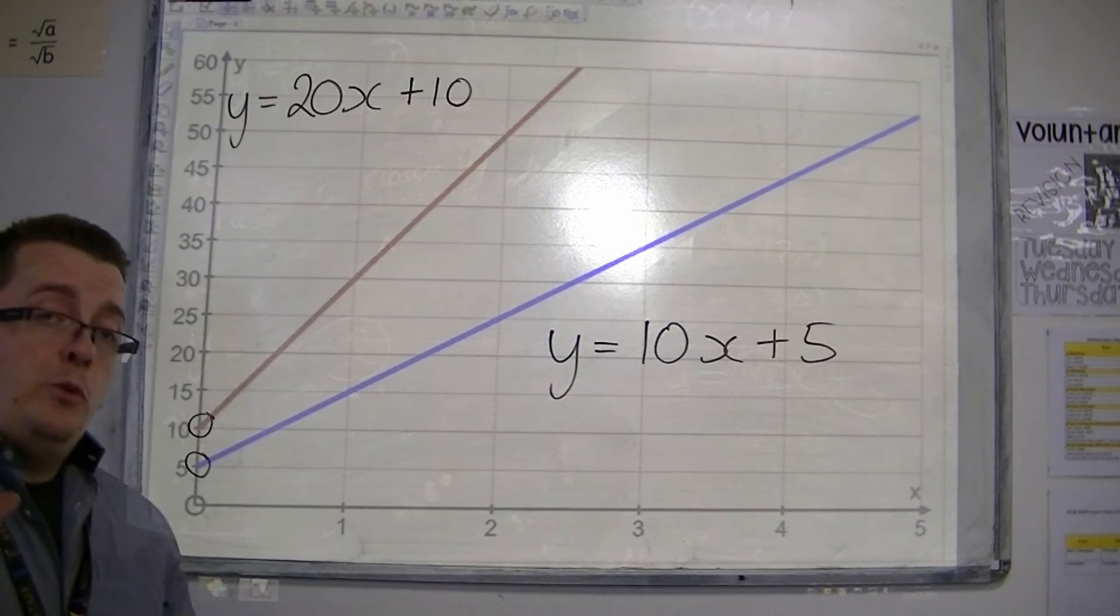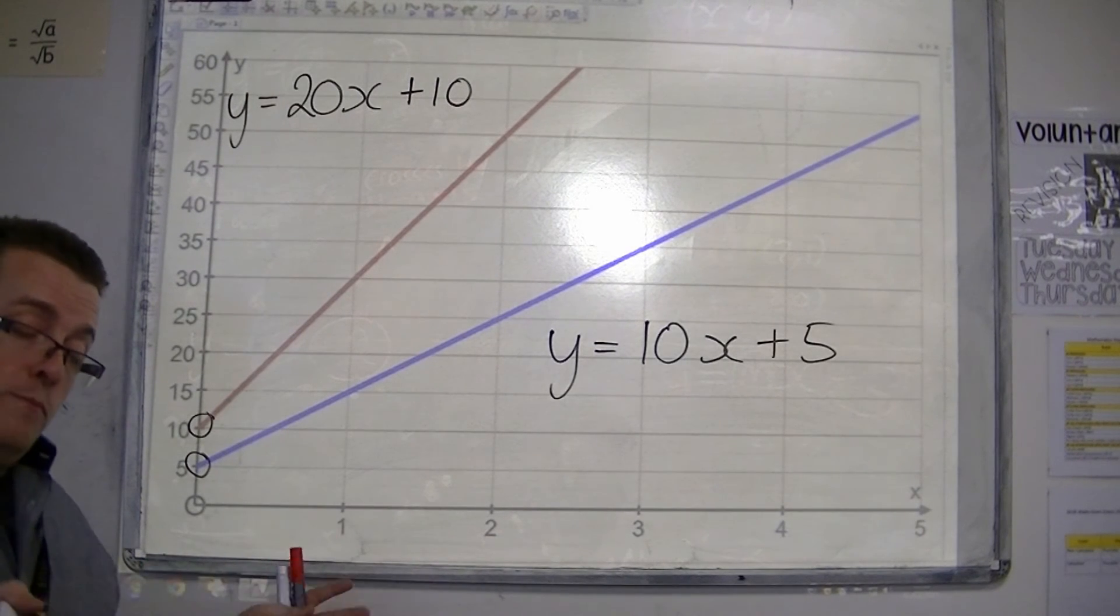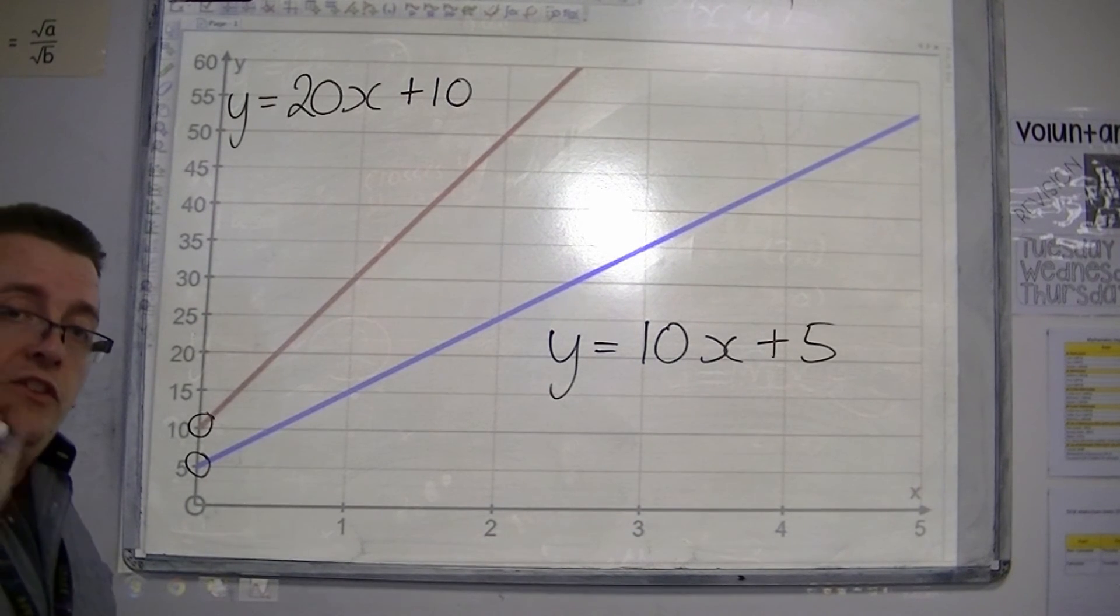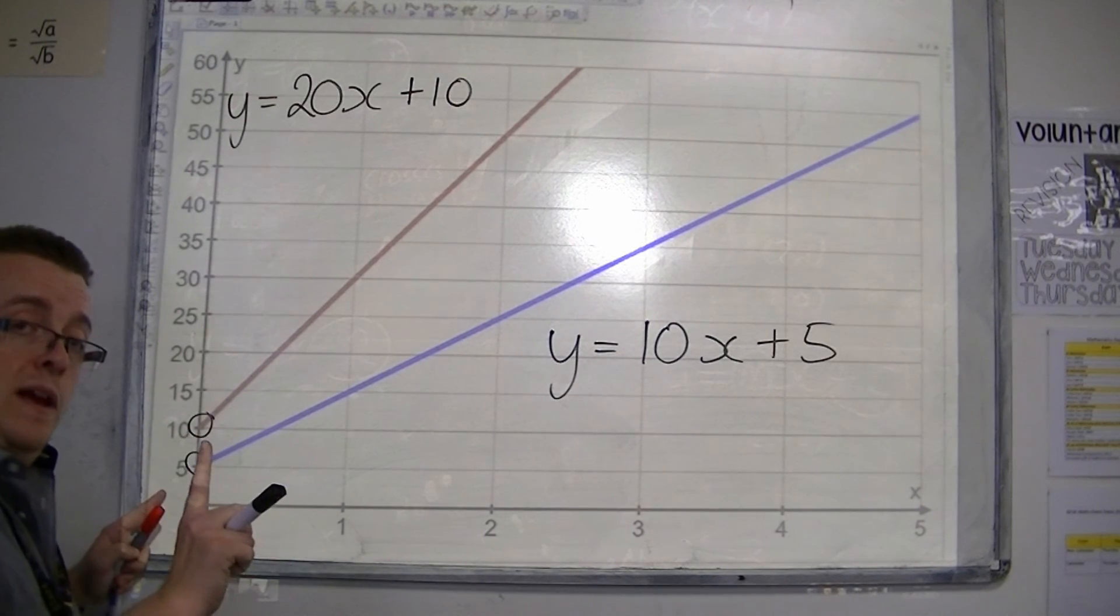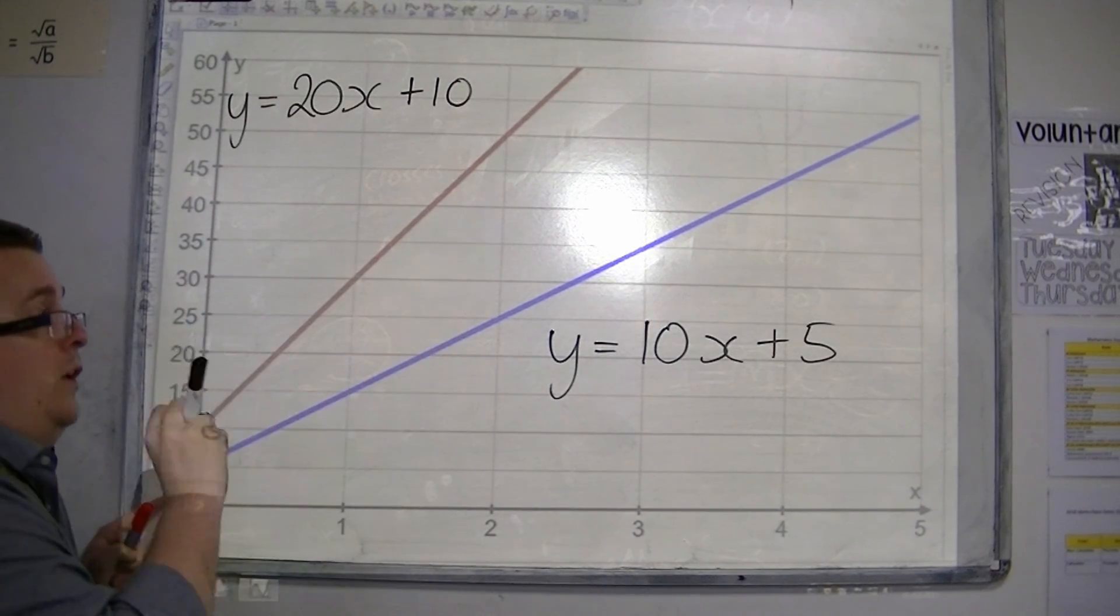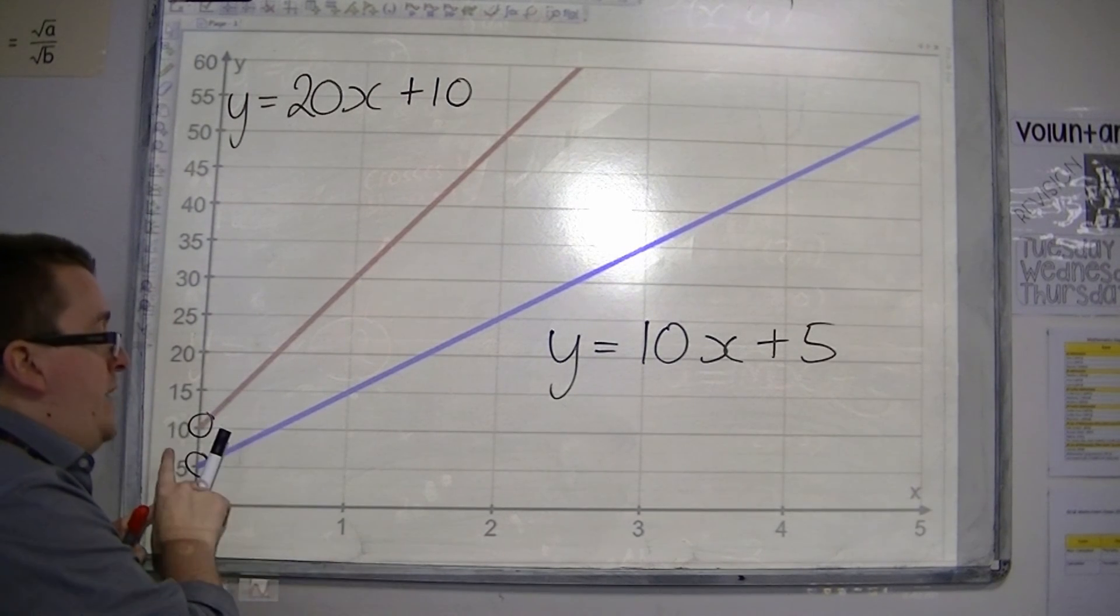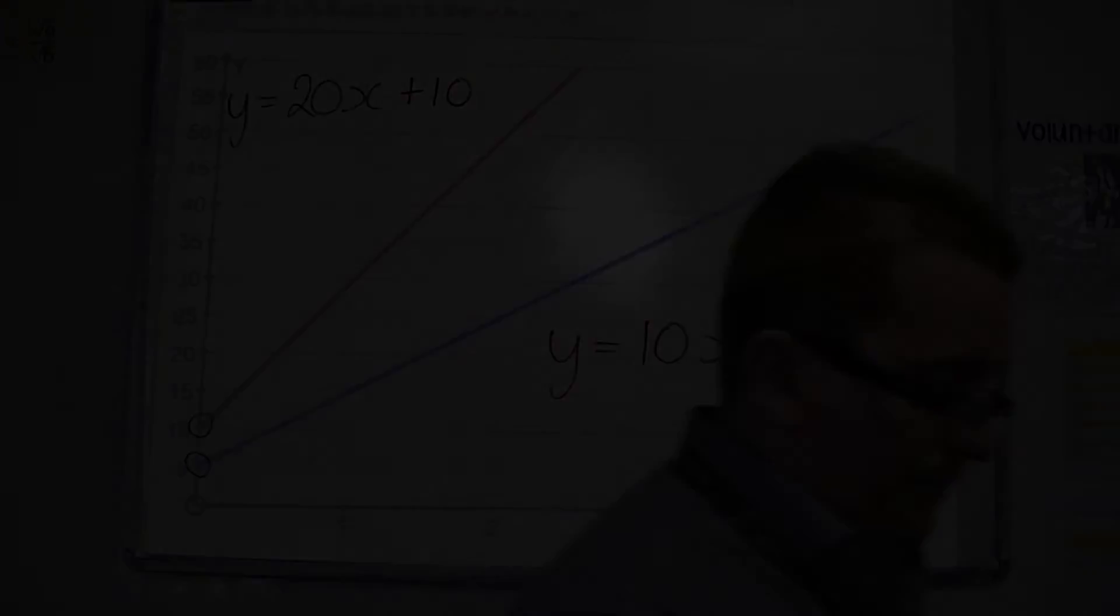So you need to be able to identify, sometimes from a list of 3 or 4 different possible options, what the equation of the line will be. And that is how you identify them. Determine where it crosses the y-axis, and that will give you a hint. That's the number plus or minus on the end. And then what is the gradient? For every one along, how much are you going up?